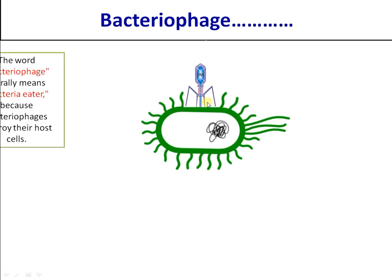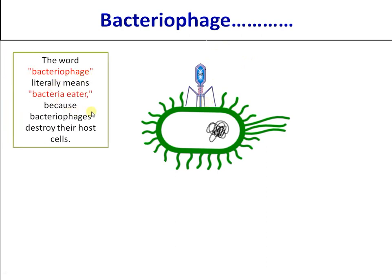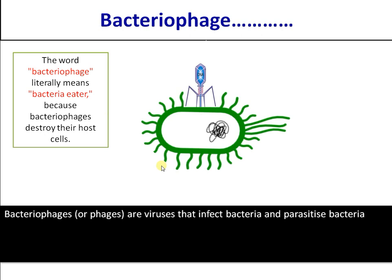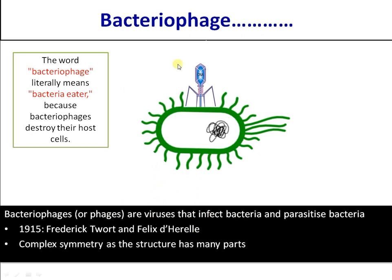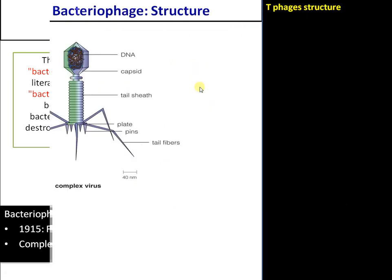The term bacteriophage literally means 'bacteria eater,' as it causes lysis of the host cell. It was discovered by Twort, but further explanation was given by d'Herelle. Bacteriophages have a complex symmetry, consisting of many parts, which we will be looking into in detail.